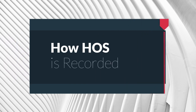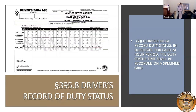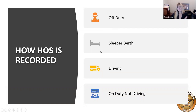The duty statuses are: off-duty, sleeper berth, driving, and on-duty not driving. ELDs are also required to keep this grid — that part didn't change. All compliant ELD systems have the same grid. There is one other type of log for oil and gas exemptions, which has a fifth line for well site waiting time. If you're in the oil and gas industry, I highly recommend you watch that particular class once you've watched this one, because they kind of go together.